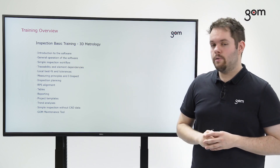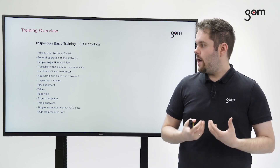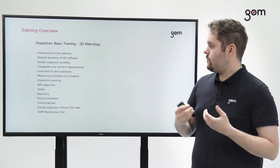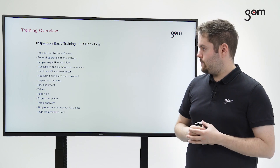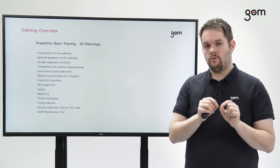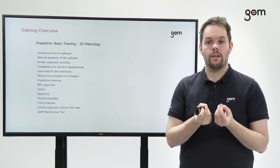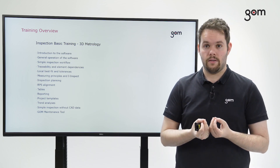We are then going to take a look at the first simple inspection workflow — the fundamental inspections — so you will get to know how inspecting with the software works in general, and afterwards we can go on to more advanced inspections. We will then have a look at traceability and element dependencies, which is a crucial chapter about parametric inspection within our software — all the dependencies that are created while using the software, which the software tracks automatically, leading to some major benefits.